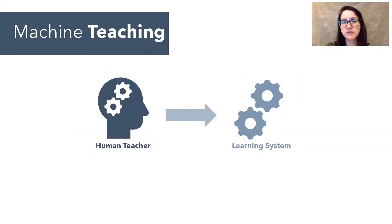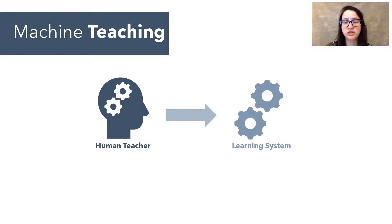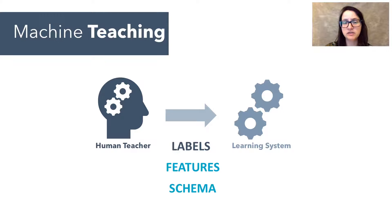An approach to make this process less painful is a vision called machine teaching. It is about making the training process more like a teaching process, where a human poses as a teacher to a computational learning system. This happens via a rich interchange that transcends traditional label-based learning and includes higher-level semantic constructs like features and schema.